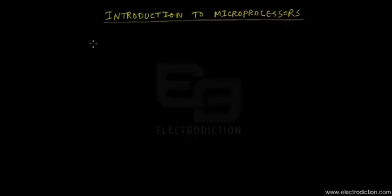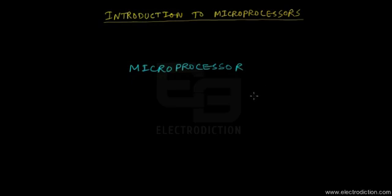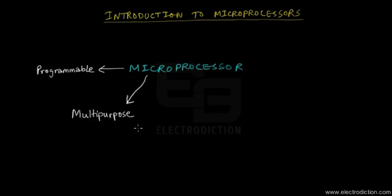Welcome to a tutorial on the introduction to microprocessors. A microprocessor is basically a very powerful computing chip. In a nutshell, a microprocessor is a programmable device, meaning you can instruct it to perform various kinds of functions, and it is multi-purpose, meaning it can be used to perform an array of different types of tasks.